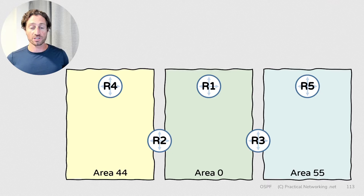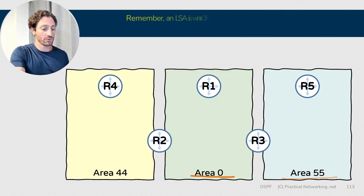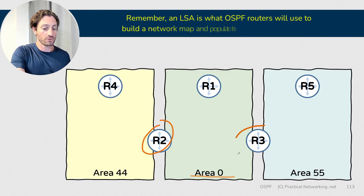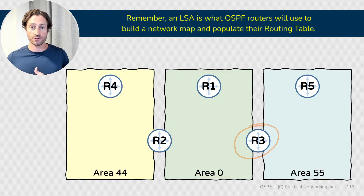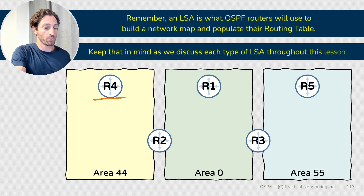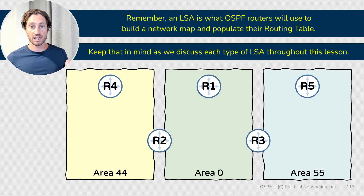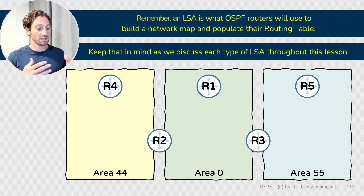This is the topology that we'll be using in this lesson. We have three areas: Area 44, Area 55, and Area 0. Router 2 and Router 3 serve as our Area Border Routers, or ABRs. We also have Router 4, Router 1, and Router 5 as internal routers in each of these areas — consider them as representing any amount of internal routers in the respective area.